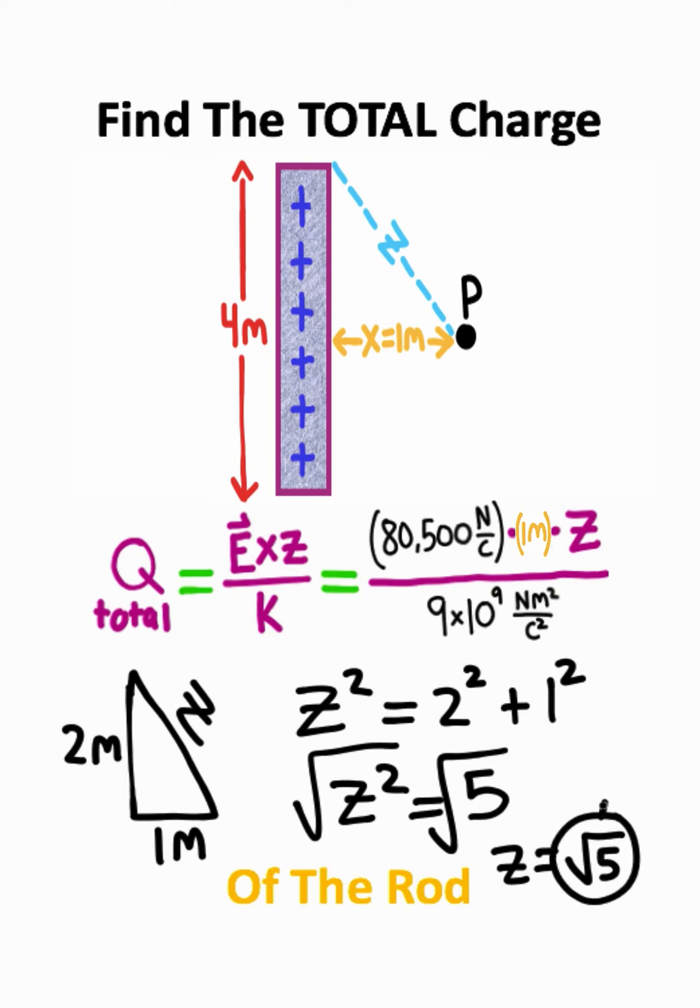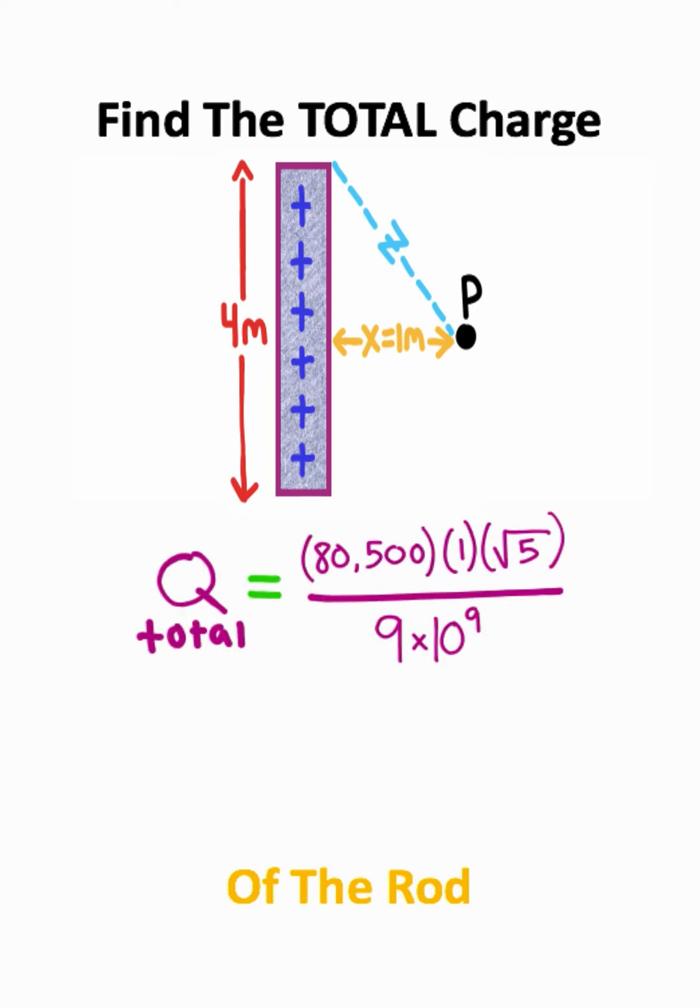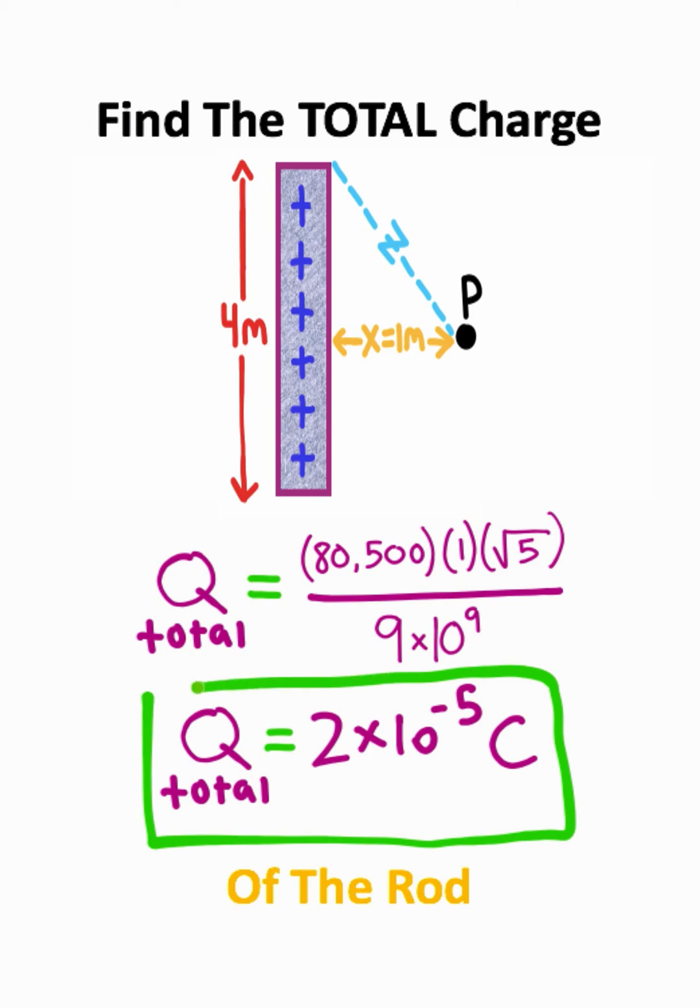So we can take the square root of five meters and plug it in for z. You can crunch these numbers pretty quickly on your calculator to get a total charge of about two times ten to the negative five Coulombs. So this is the total charge of the rod.